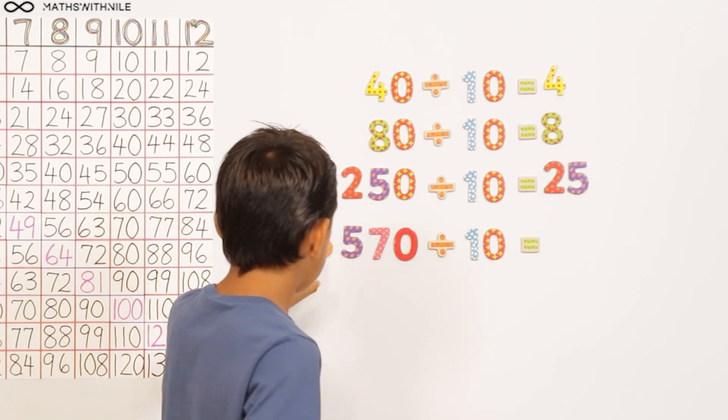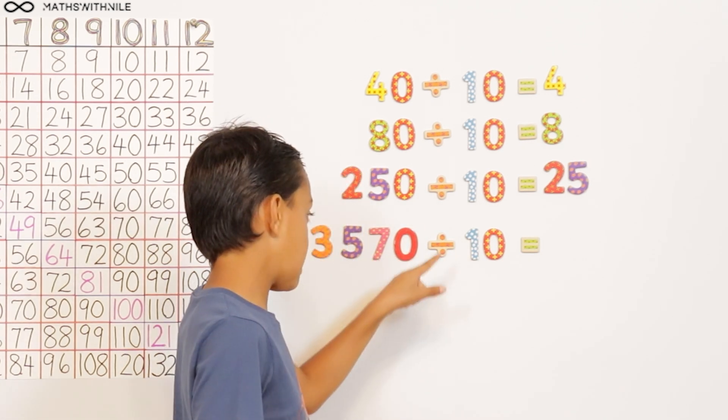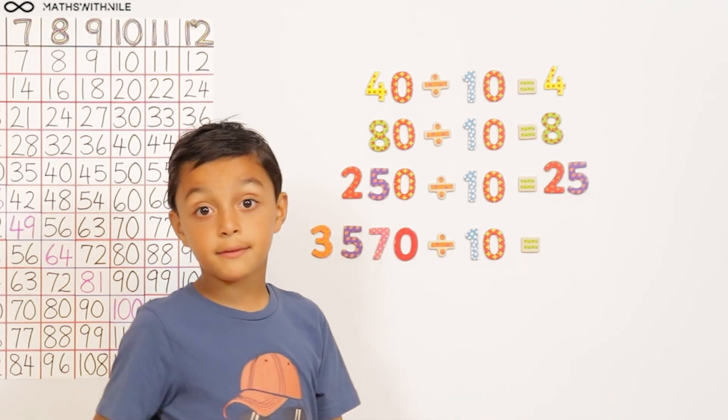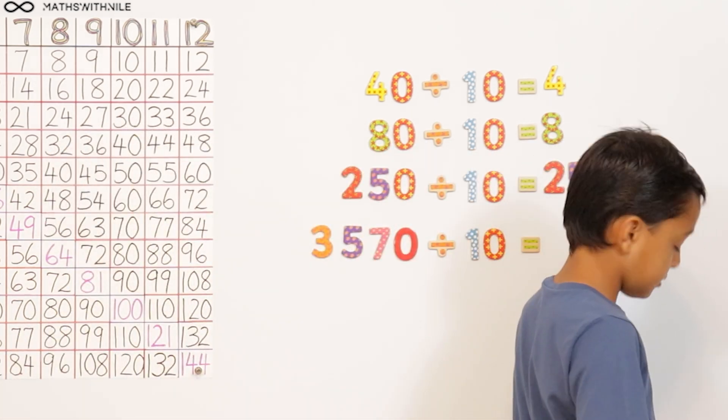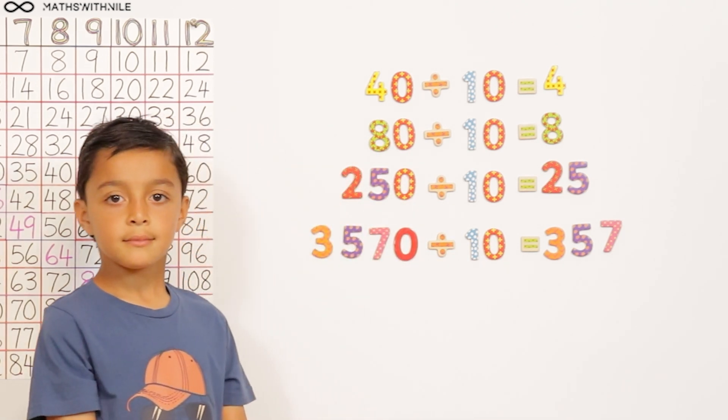And then 3570 divided by 10, take away the zero, 357. Very good, 357. Excellent, Niall. Well done.